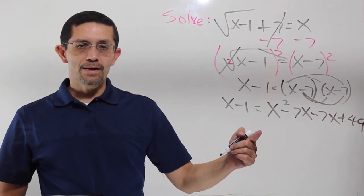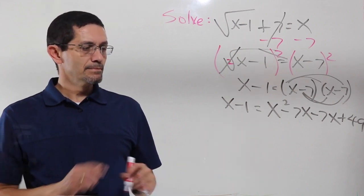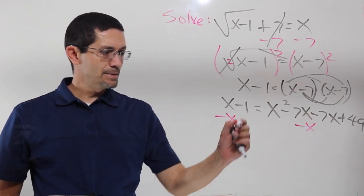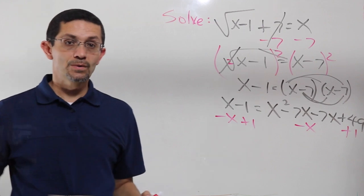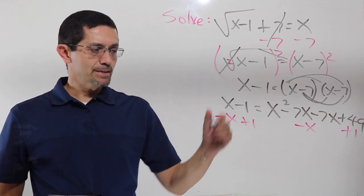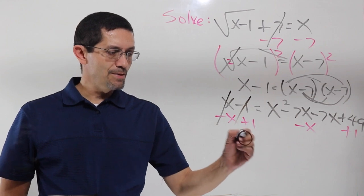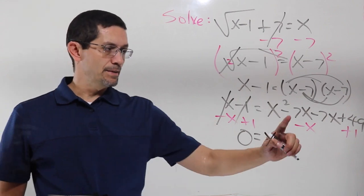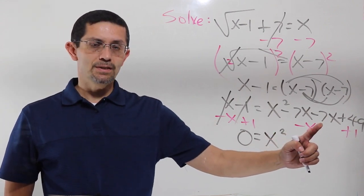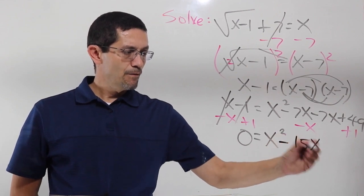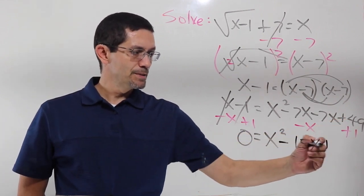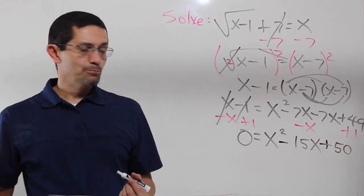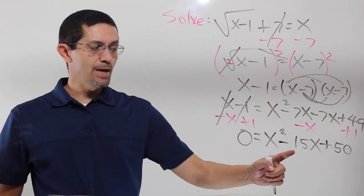Negative 7 times x is negative 7x, and that's going to give me a positive 49. Now because I have a quadratic, I've got to move everything to one side. So minus x, plus 1. x minus x cancels out, negative 1 plus 1 cancels out, therefore I have 0 on this side. On the other side I have x squared. Combining the x's: negative 7 minus 7 is negative 14, minus 1 is negative 15x. And 49 plus 1 is 50.